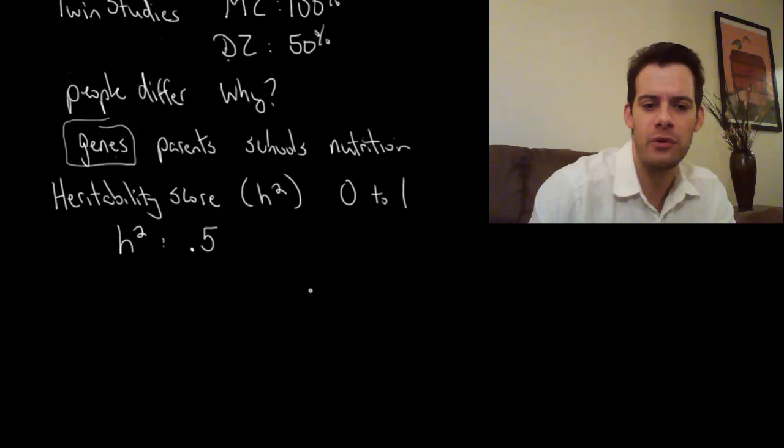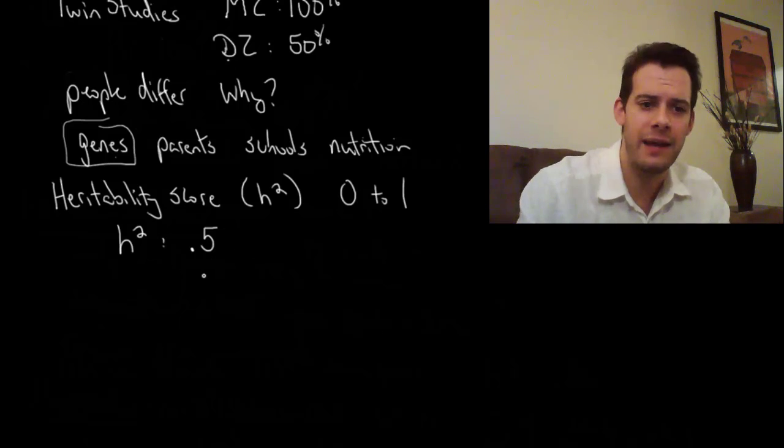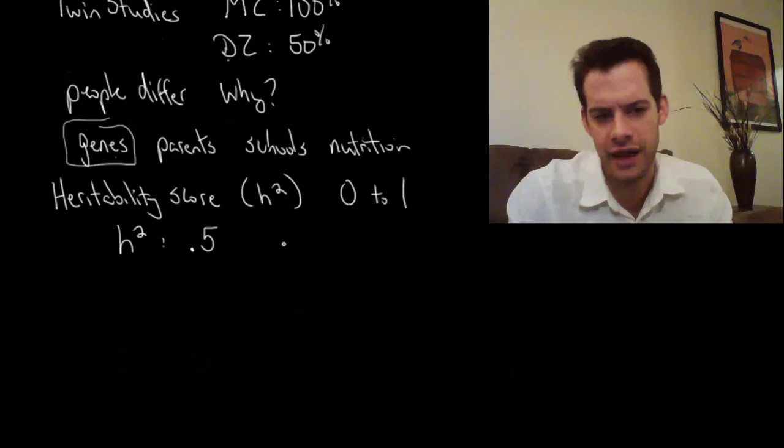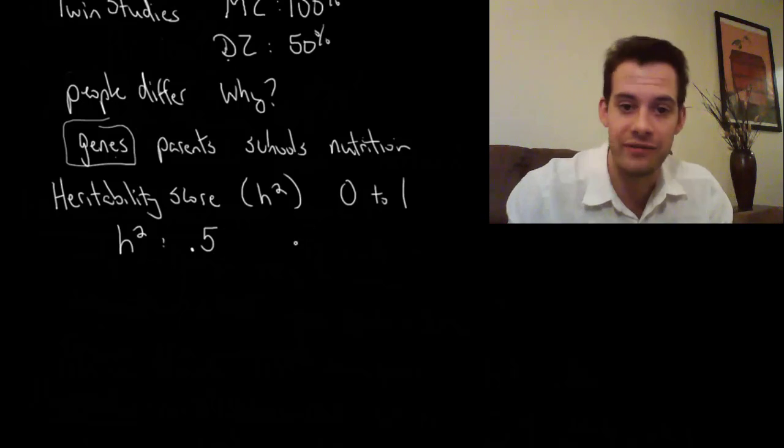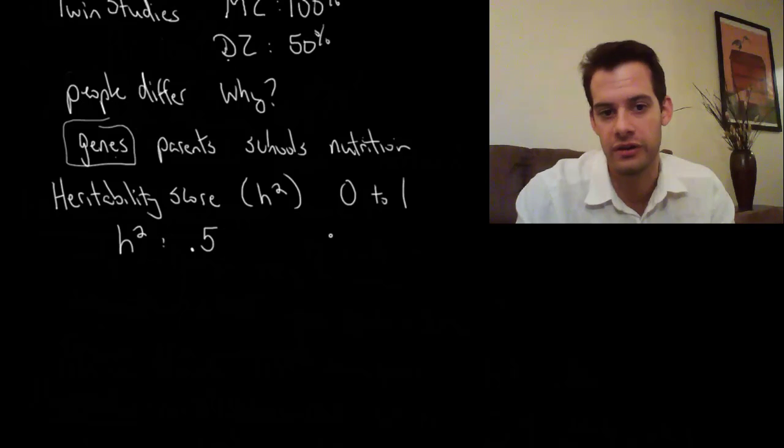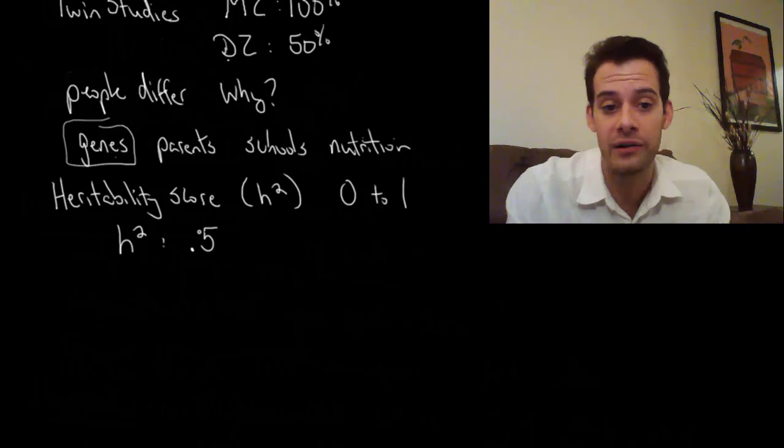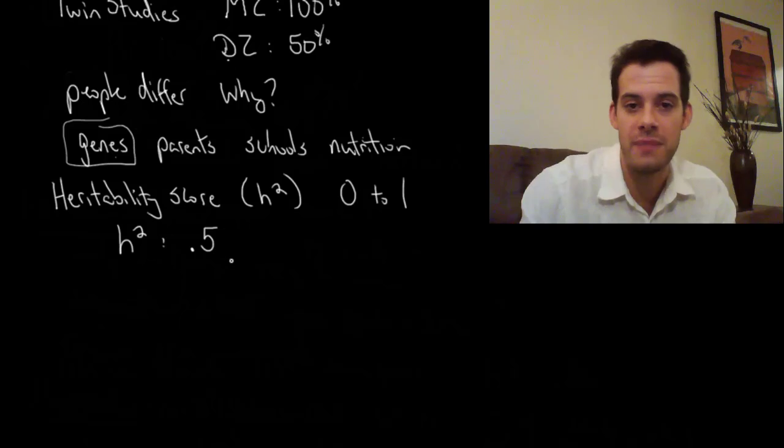So what does it mean to say the heritability score for IQ is about 0.5? It means that when we ask why do people have different IQs, about half of the explanation is people have different genes. And the other half of the explanation is people have different environments—people go to different schools, they have different parents, they have different levels of nutrition—and both of these factors matter and in this case they're about even. Genes matter about as much as environment matters.